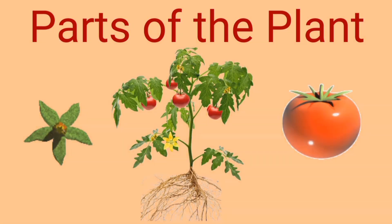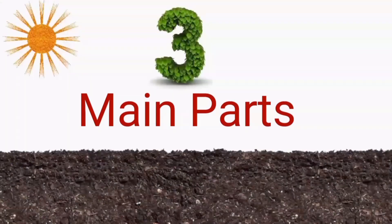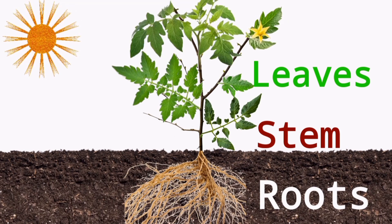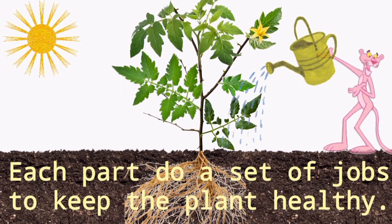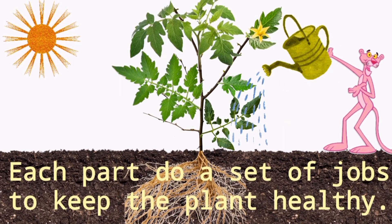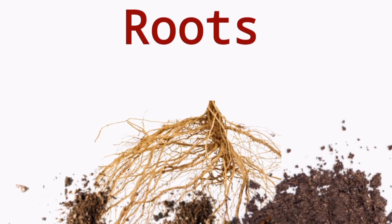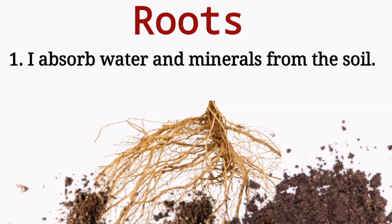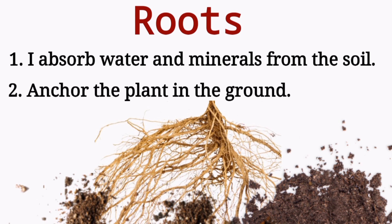The three main parts of the plant are the roots, the stem, and the leaves. Each part does a set of jobs to keep the plant healthy. Roots absorb water and minerals from the soil and anchor the plant in the ground.